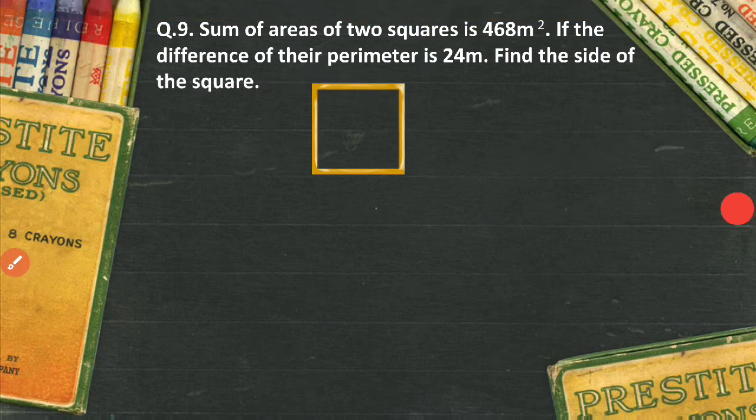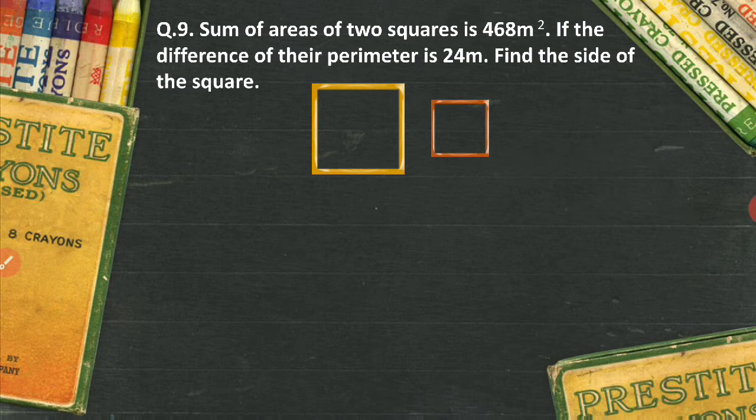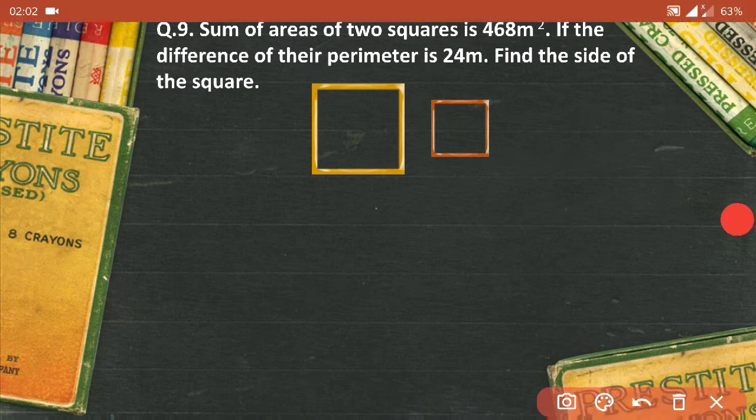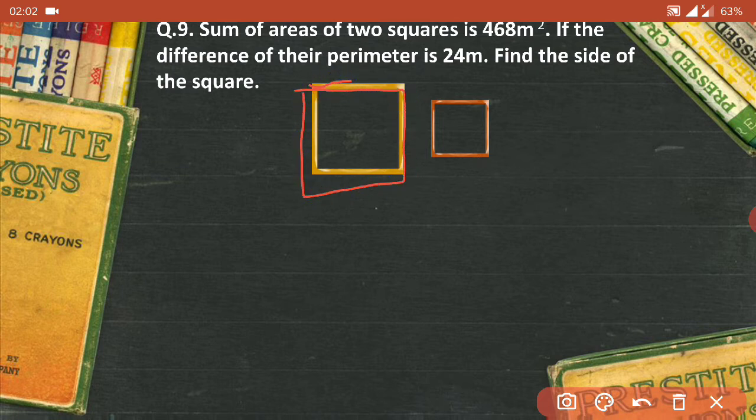I have two squares right. Now since I have said the difference in their perimeter, let us understand what is a perimeter. If I'm talking about perimeter, it is the walk around the path. That's the simplest way to understand the meaning of perimeter, which means if I start from here, I'll walk this entire path once and it will be called as a perimeter. For this figure, I'll walk around these edges and this will be called as perimeter.